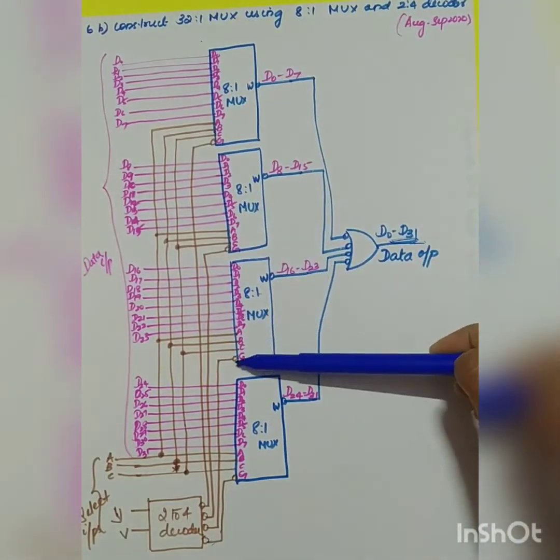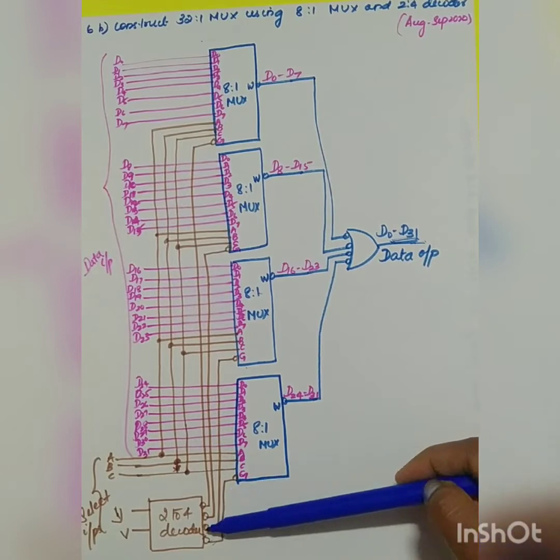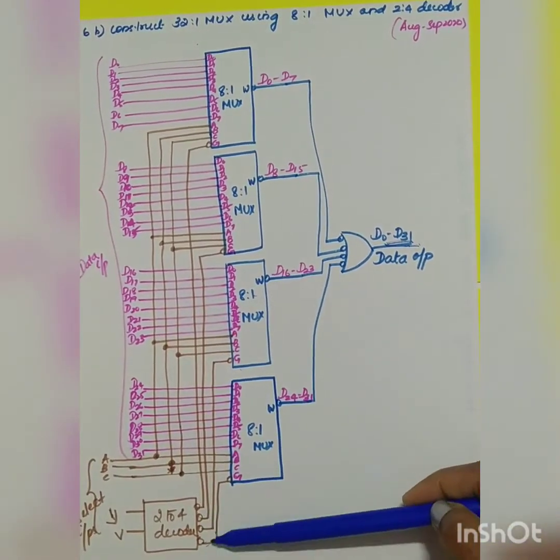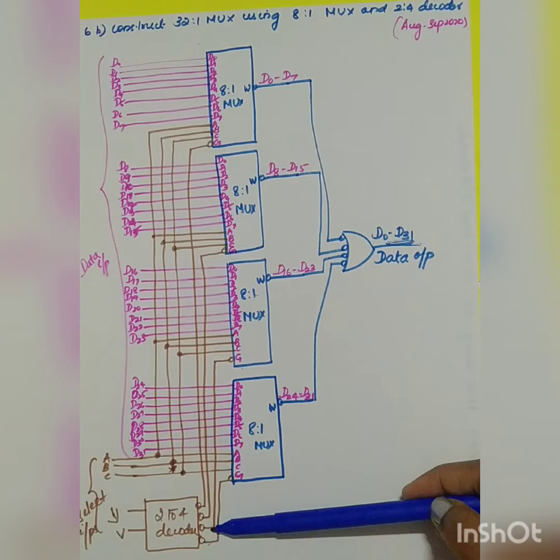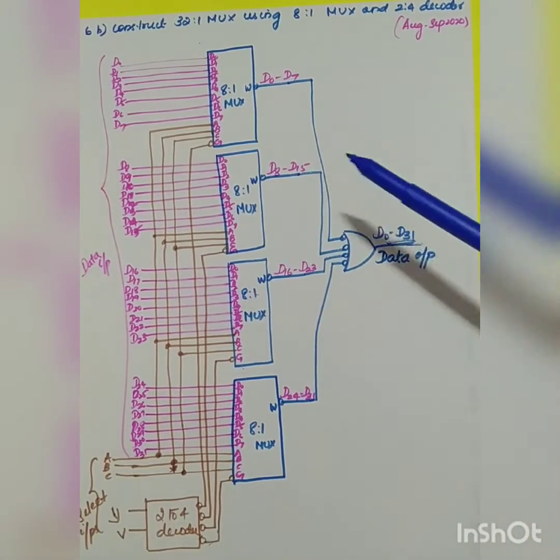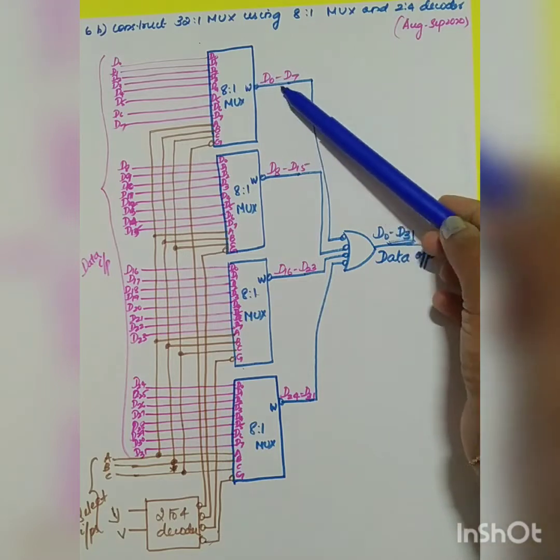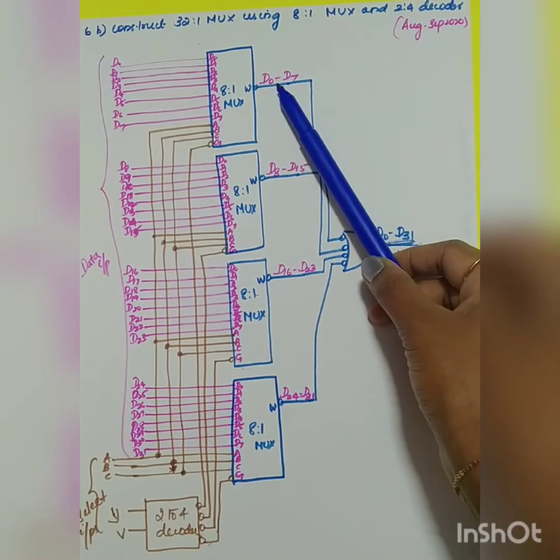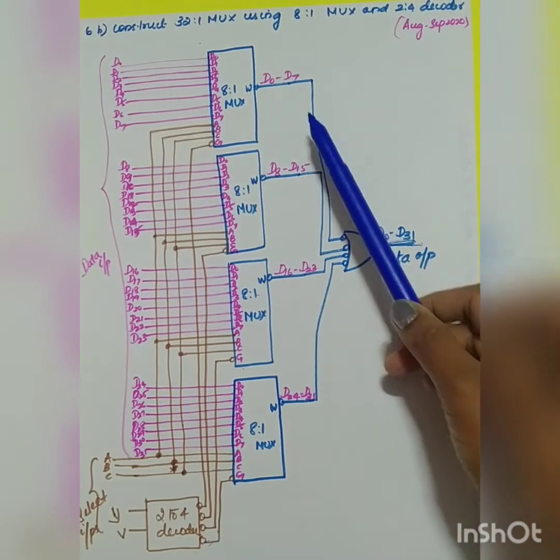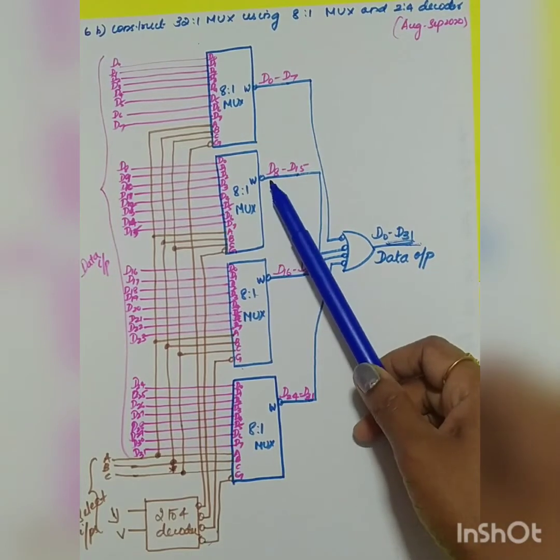At any instant of time you will have only one output selected in the decoder, and that corresponding MUX will be enabled. That's how this circuit works. Your first MUX will switch the data from d0 to d7.